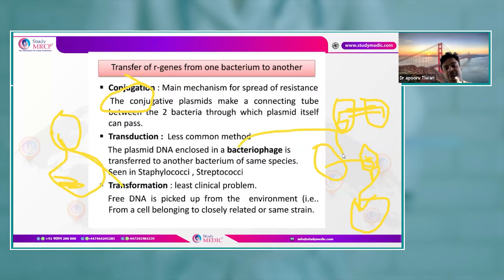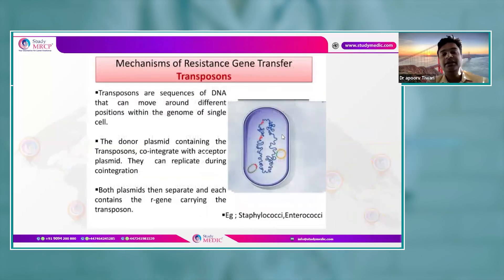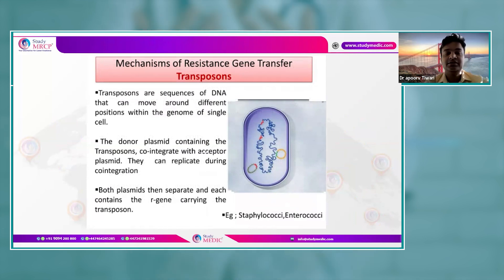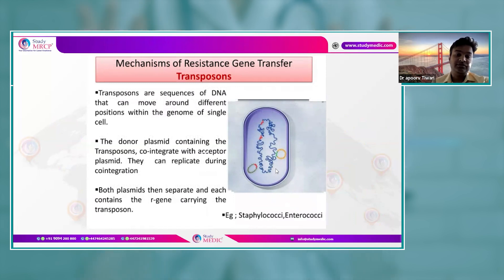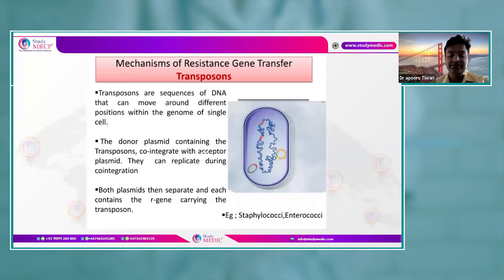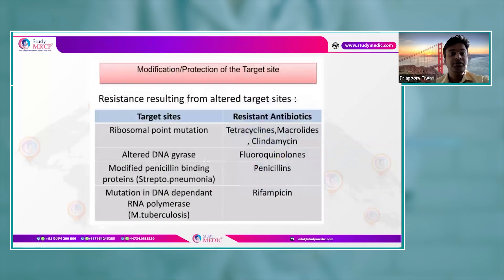Transposons are sequences of DNA that can move around different positions within the genome of a single cell. A donor plasmid containing transposons co-integrates with an acceptor plasmid; during co-integration both plasmids replicate, then separate — each containing the R gene carrying the transposon.